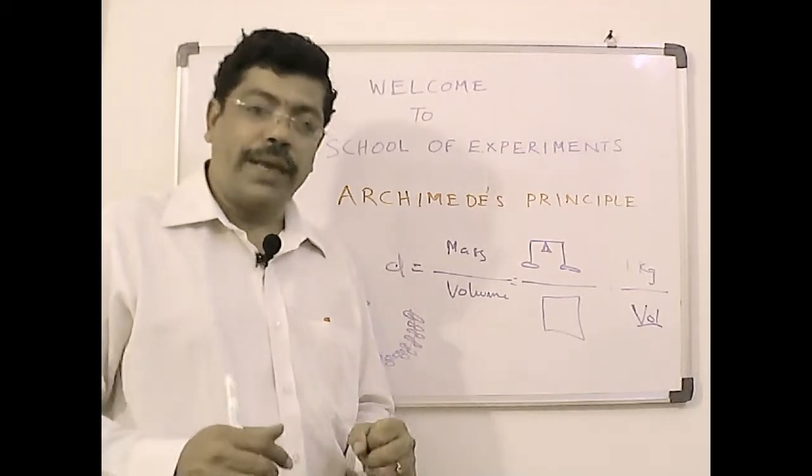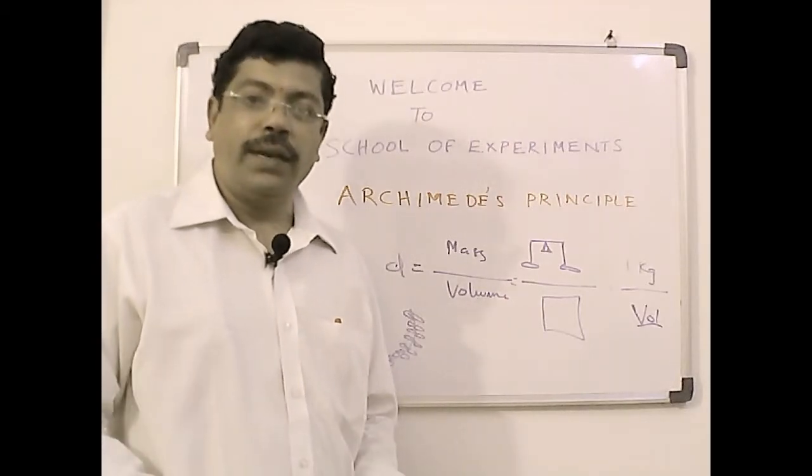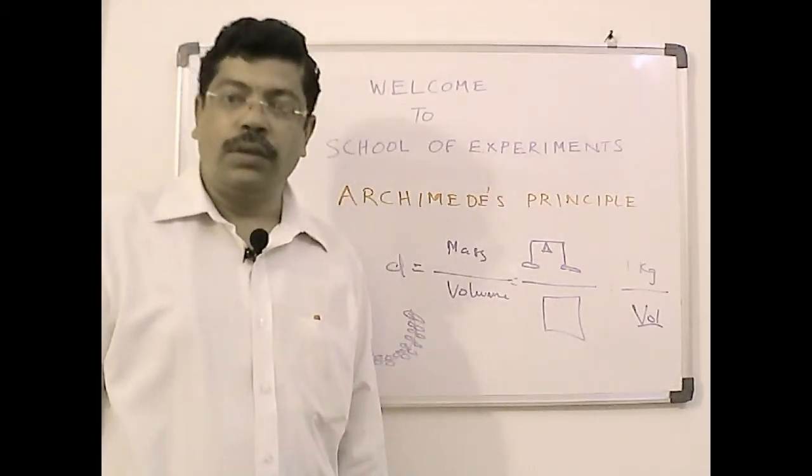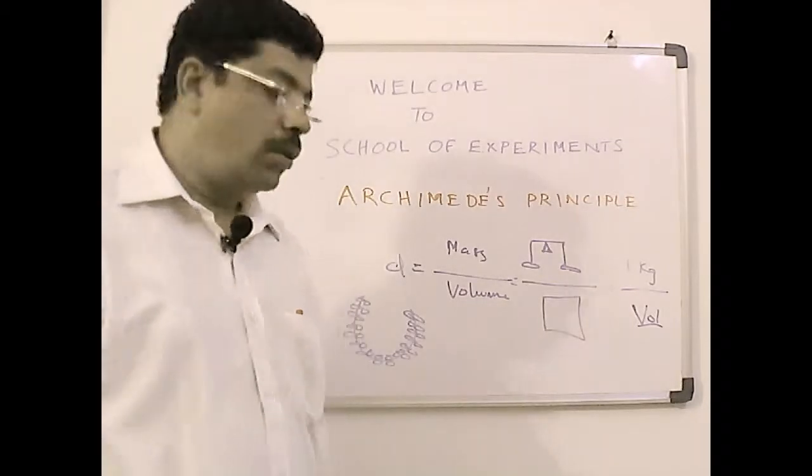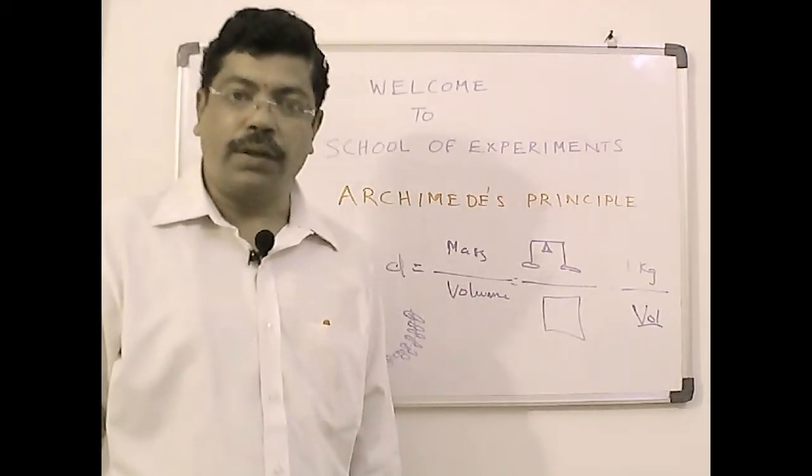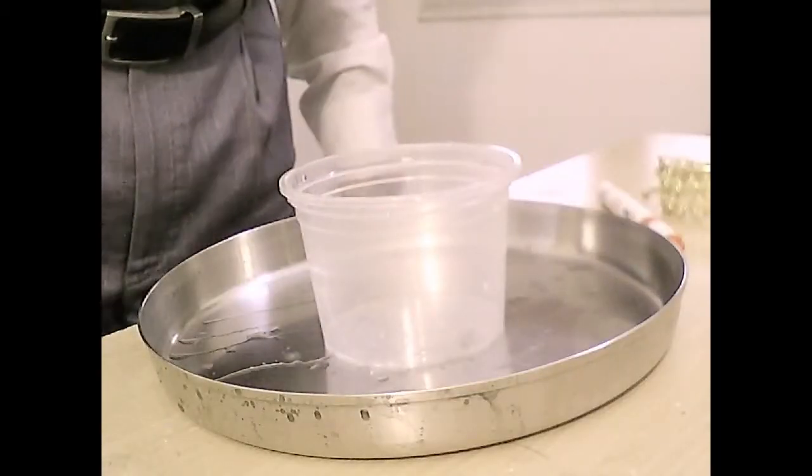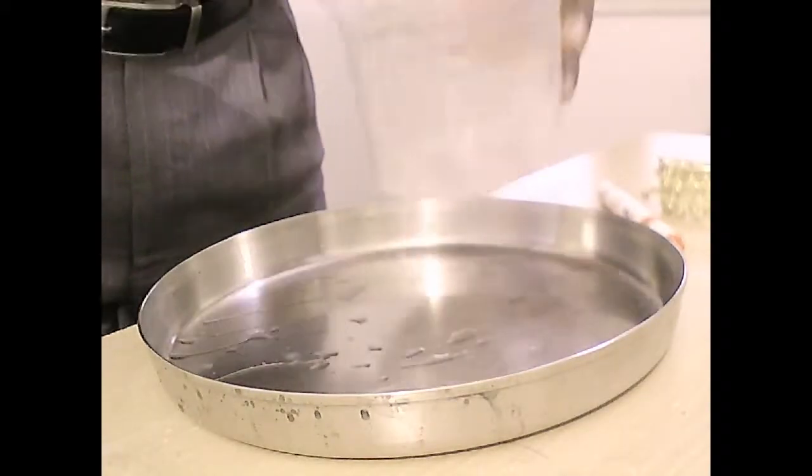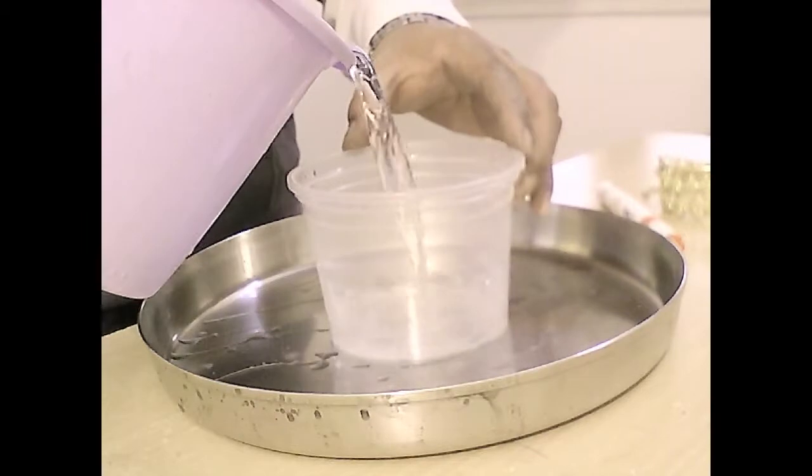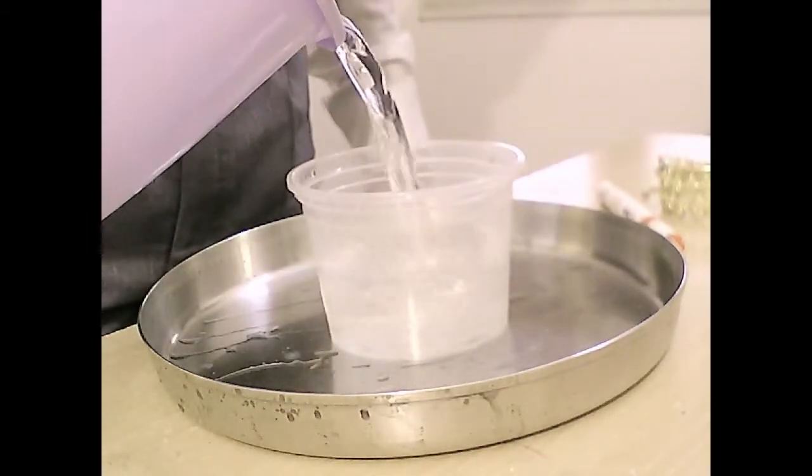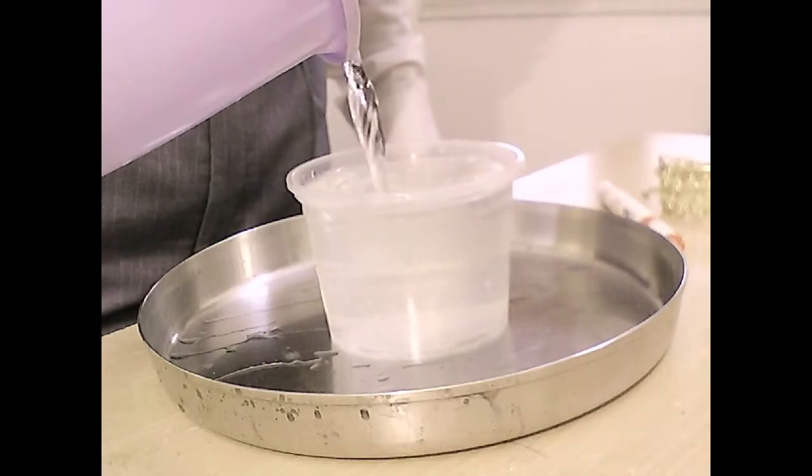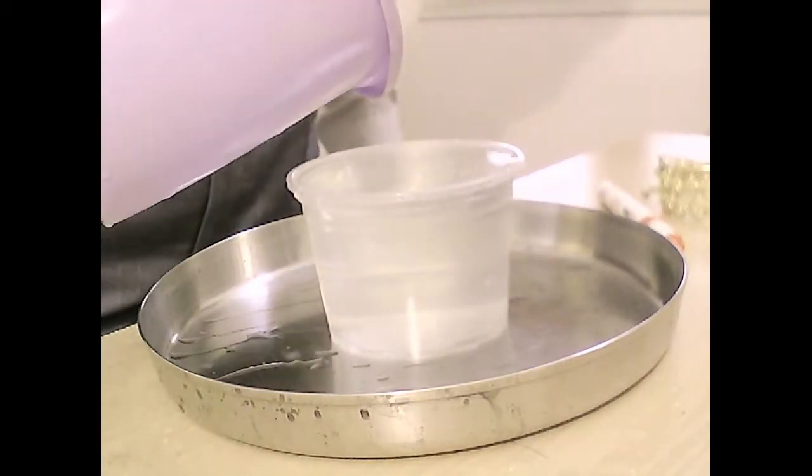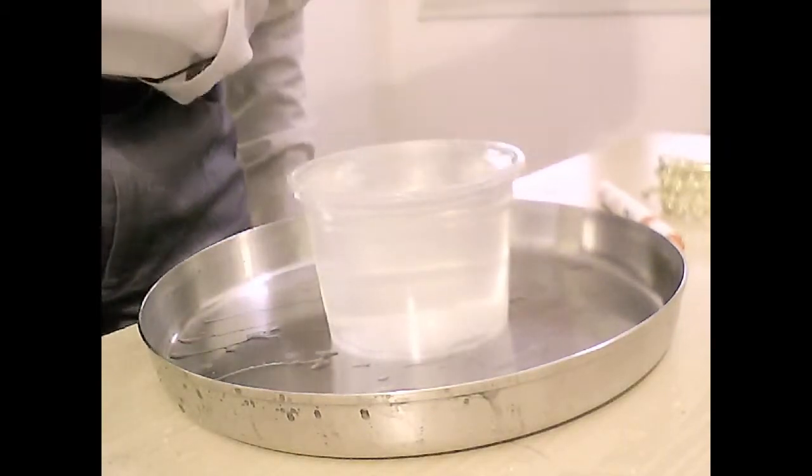Now I will show you the experiment physically, I will show the experiment using different objects and how we can find out the mass and volume of the objects, density and calculate the density out of that. Now I will take an empty tub where I will put water full into this tub and then let us put it to the brim and the moment we put any object, this water should overflow. It should be full up to the top.